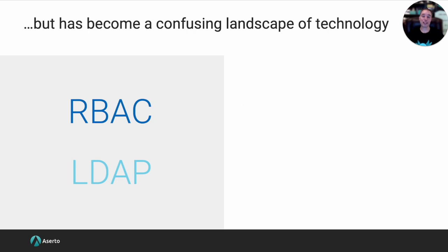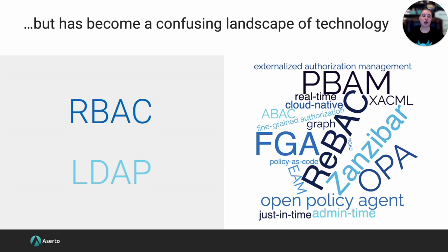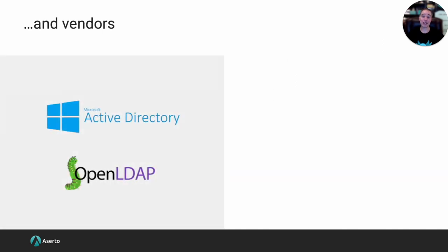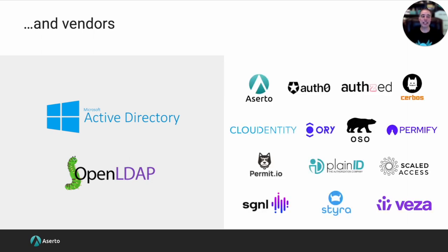But there's also bad news. It used to be that the technology landscape in authorization was simple — you had RBAC as a model and LDAP as a protocol. Now you basically have a complete cacophony of acronyms, technologies, models, protocols, enforcement points, and implementations. Not to mention a whole bunch of vendors. Even though authorization is the number one problem that identity and access teams face today, they're all frozen because there's so much noise in the market. In this talk, we're going to simplify all of that and create a framework for how to evaluate both technology and vendors.